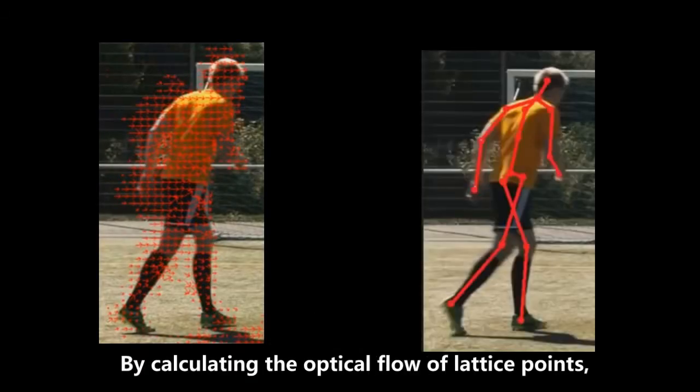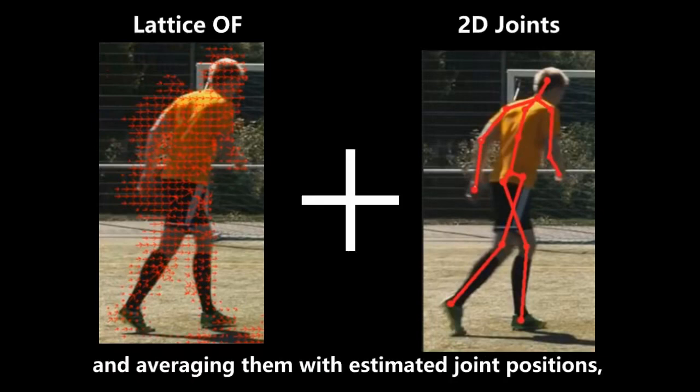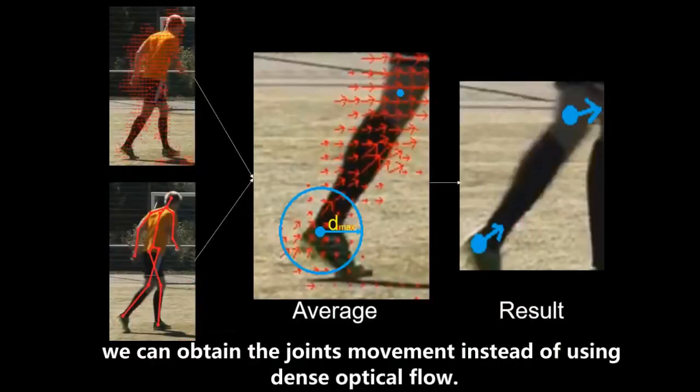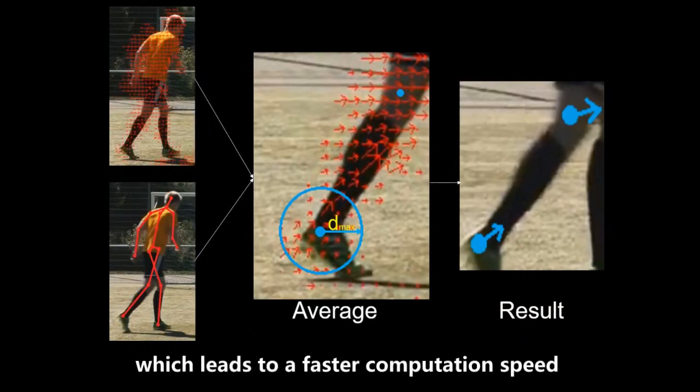We propose a sparse optical flow method. By calculating the optical flow of lattice points and averaging them with estimated joint positions, we can obtain the joint movement instead of using dense optical flow, which leads to faster computation speed.